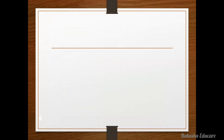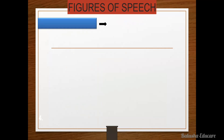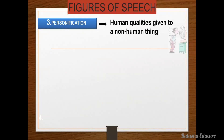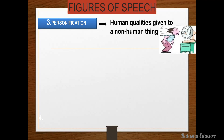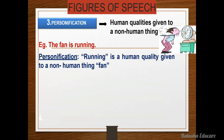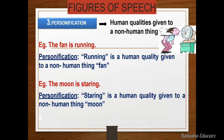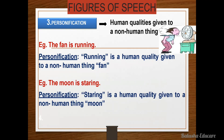The next figure of speech is personification — human quality is given to non-living or non-human things. For example, 'The fan is running.' Here the figure of speech is personification because 'running' is a human quality given to a non-human thing, that is the fan. Another example: 'The moon is staring' — 'staring' is a human quality given to a non-human thing, that is the moon.